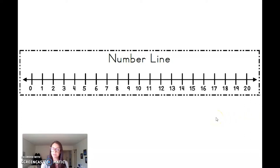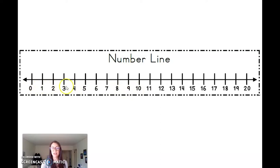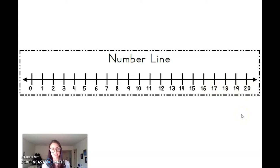Let's start by thinking about what my number can't be. If my number is greater than 10, it cannot be any of these numbers that come before 10 on the number line. It cannot be any numbers that are less than 10. It's greater than 10. Okay, go ahead and take a new guess. Now that you know my number is greater than 10, make a new guess.